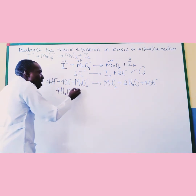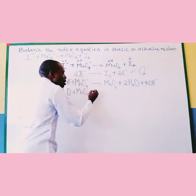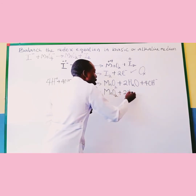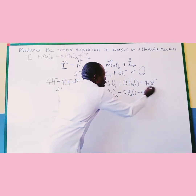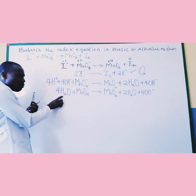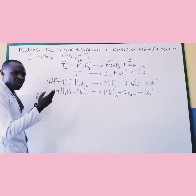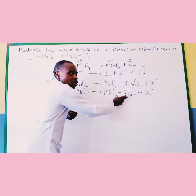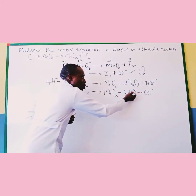So we get 4H2O plus 4OH⁻. Now, I'm having 4H2O on one side and 2H2O on the other. Something can be removed — it's like 4 minus 2. So 4 minus 2 means we cancel the 2H2O, and what remains is reduced to 2H2O.